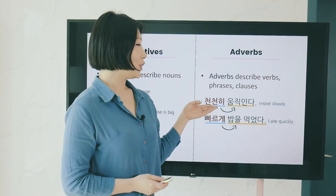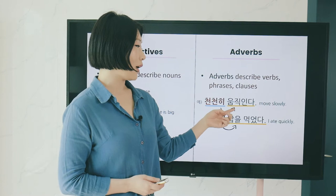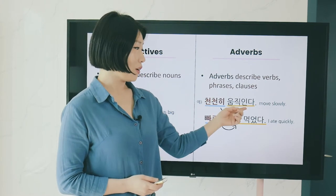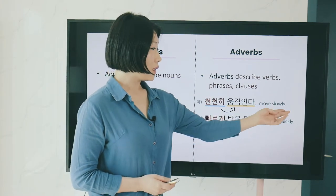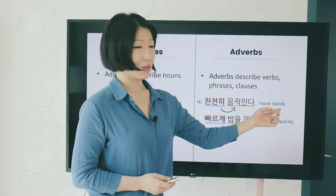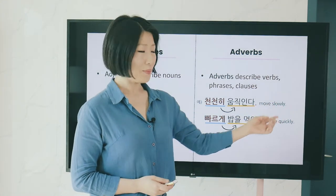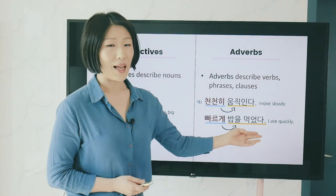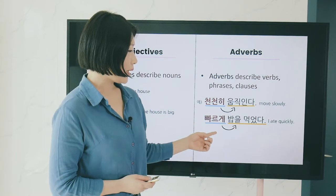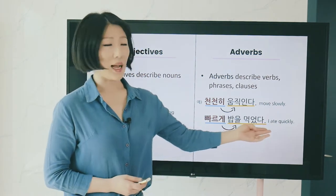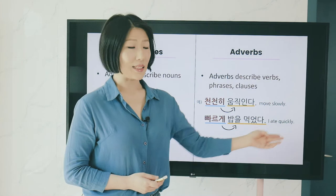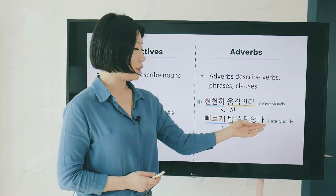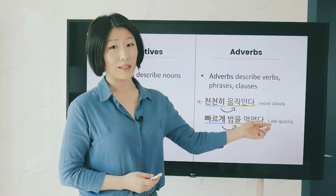천천히 움직인다 means 'move slowly' — the adverb 천천히 modifies 움직인다 just before the verb. In English, 'slowly' comes just after the verb. Similarly, 빠르게 밥을 먹었다 means 'I ate quickly' — 빠르게 describes 밥을 먹었다.